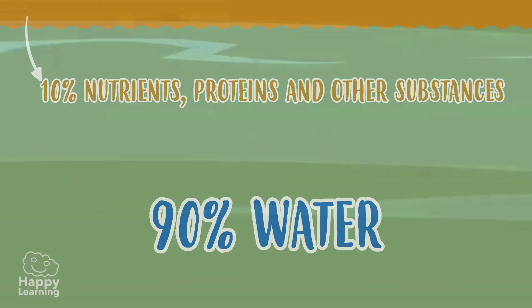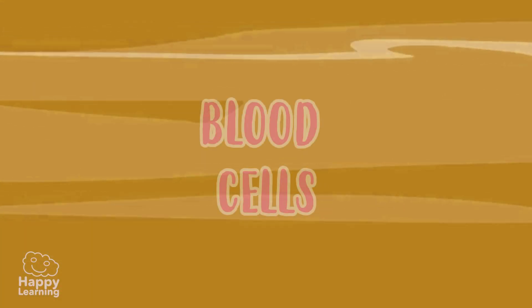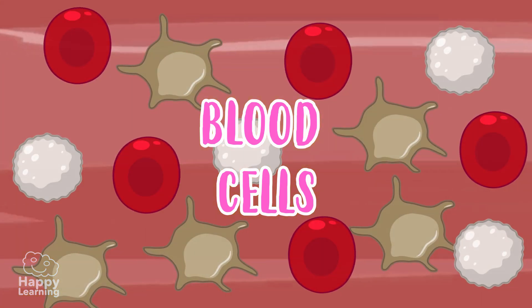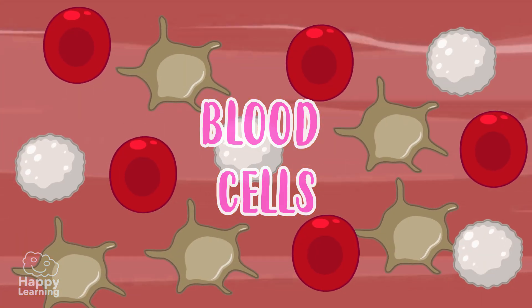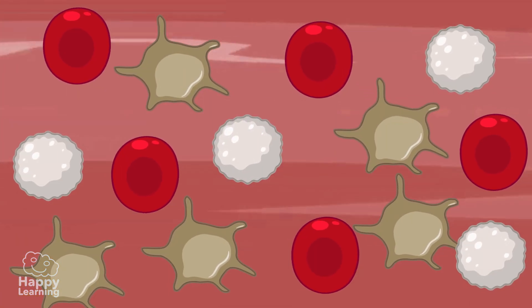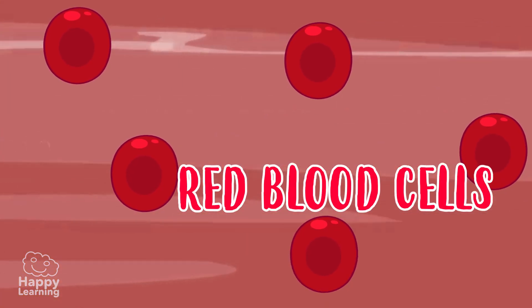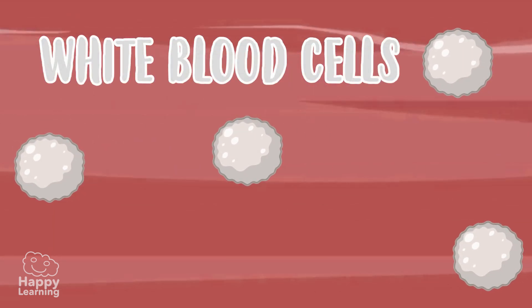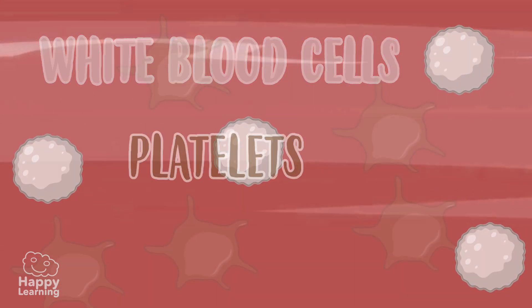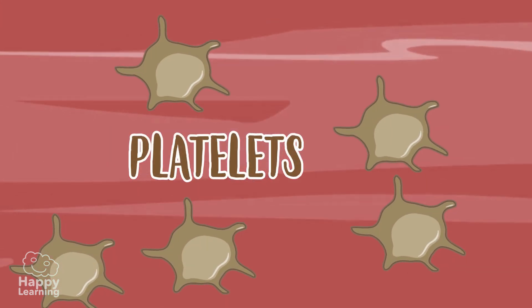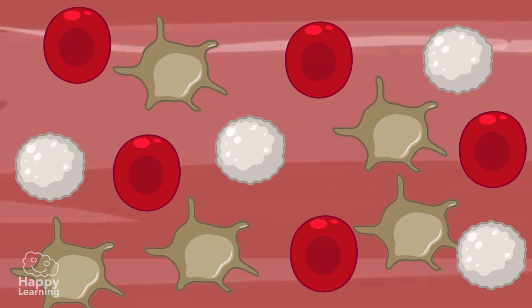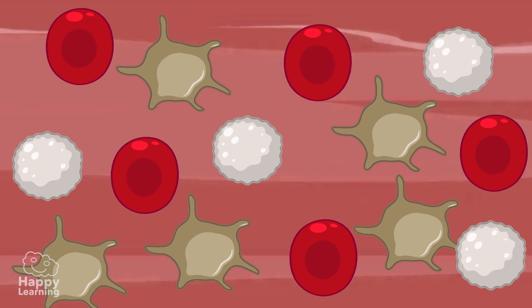There are three types of blood cells: red blood cells, white blood cells and platelets — and they all have different functions.